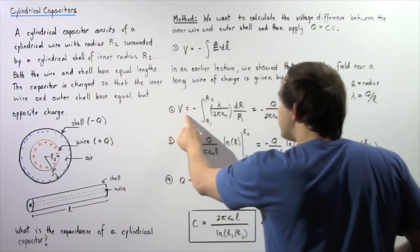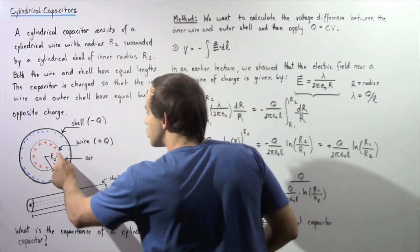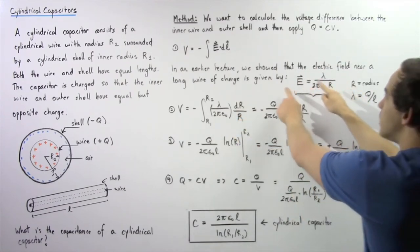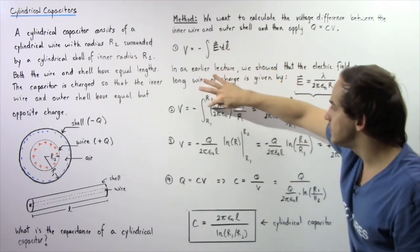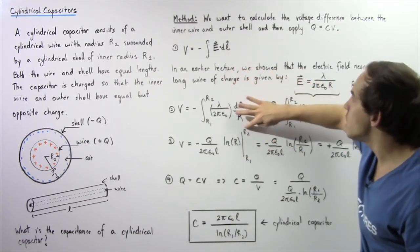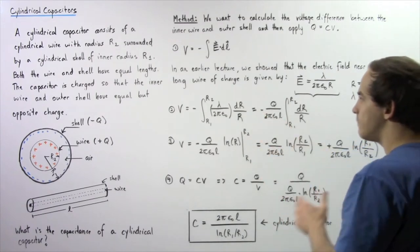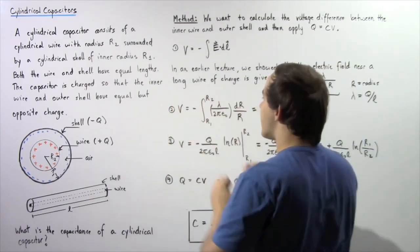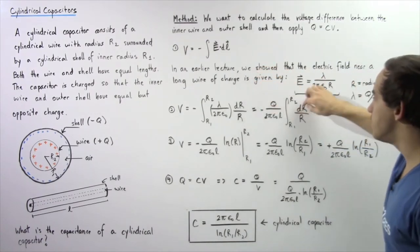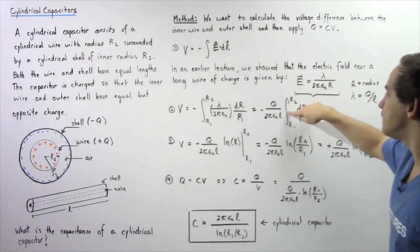So our voltage difference is equal to the negative of the integral from radius R1 to radius R2. We plug in our electric field expression: lambda divided by 2 pi epsilon naught multiplied by 1 over R, giving us dr divided by R. We take the constants outside the integral and replace lambda with Q divided by L, so the outside becomes negative Q divided by 2 pi epsilon naught multiplied by L, and we integrate from R1 to R2, dr divided by R.